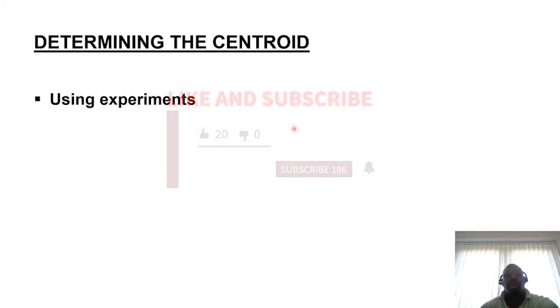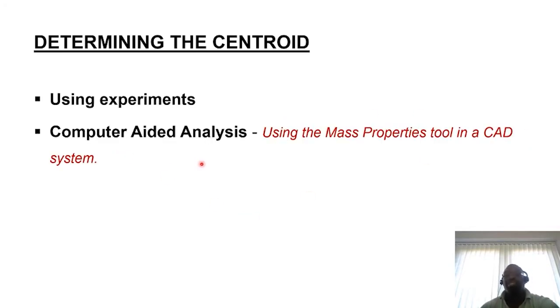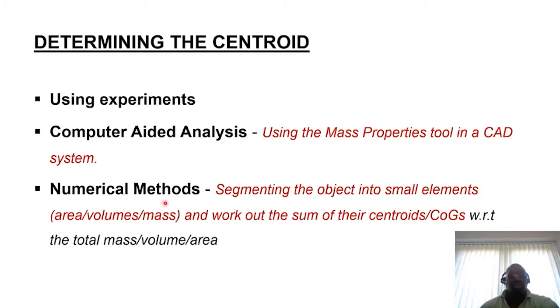We can use simple experiments to identify the centroid position, particularly for irregular forms or shapes. We can also use computer-aided analysis. So with your CAD software, you'll normally have a tool that can identify where the centroid position of a product is likely to be in terms of single parts or multiple parted assemblies. And we can also use numerical methods, which we're going to be looking at in a bit more detail down the line.